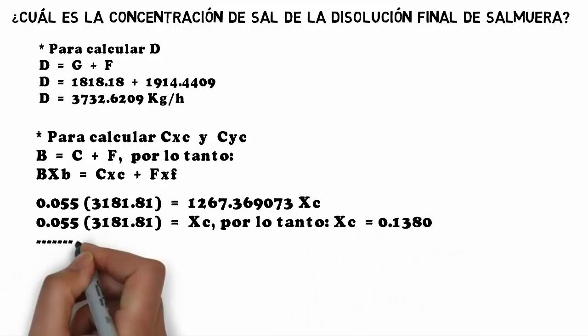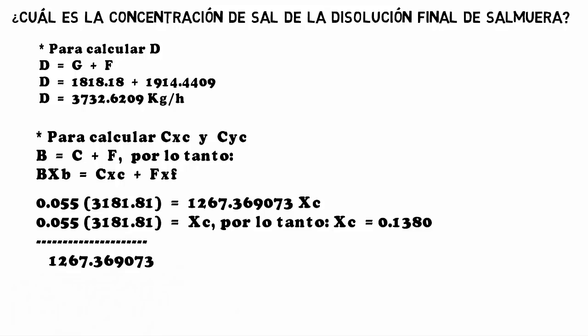This gives 0.055 × 3181.81 = 1267.36·XC. To find XC, we divide 0.055 × 3181.81 by 1267.36.